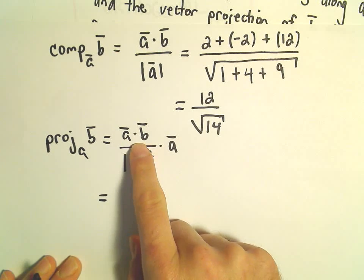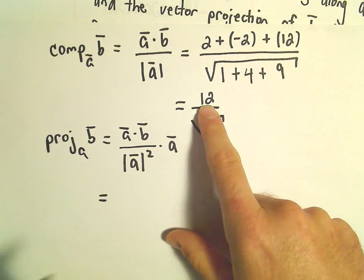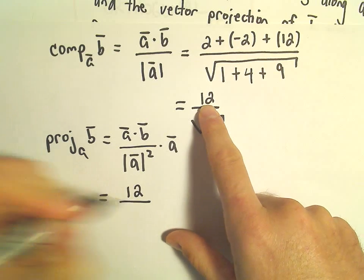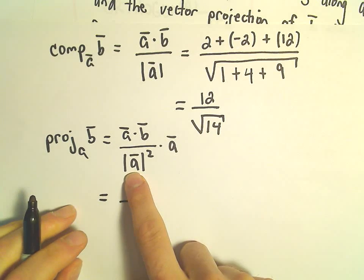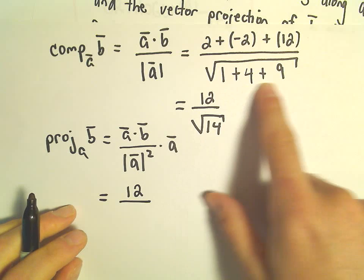Well, we figured out what A dot B was, that's what we had in the numerator a second ago, that's just going to be 12. We can take the magnitude of vector A and square it.